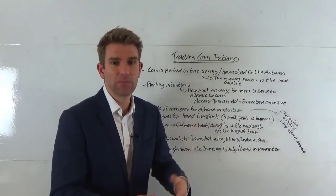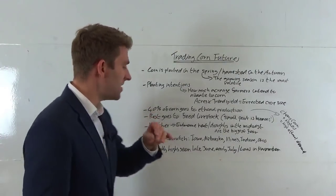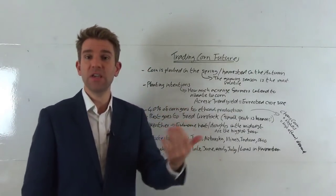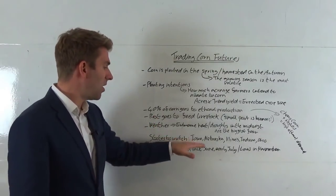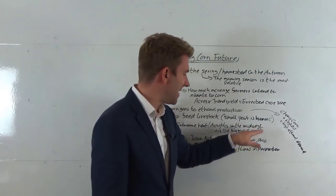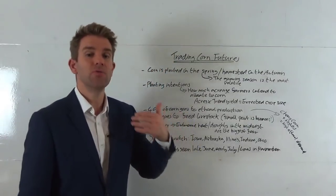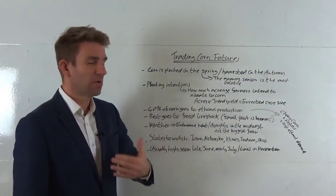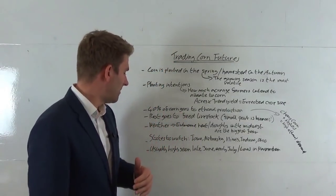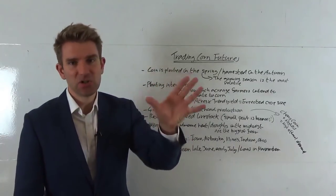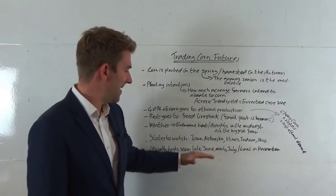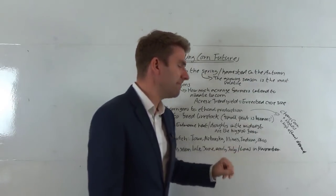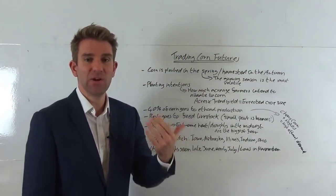The states to watch for the weather forecast to see if we get this hot dry spell or extreme heat: I've got Iowa, Nebraska, Illinois, Indiana, and Ohio. Those are the biggest states that are producers of corn. Generally speaking, this is a generalization, usually the highs in corn are seen in late June, early July, and the lows are seen in November.